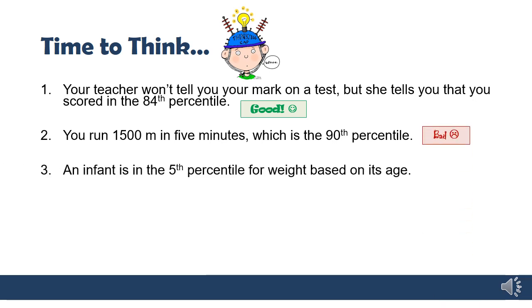An infant is in the fifth percentile for weight based on its age. That means 5% of babies weigh less than that baby does. This is probably not a good thing. It's maybe a case to go to the doctor and figure out what's going on, because most babies weigh more than this baby does for its age.